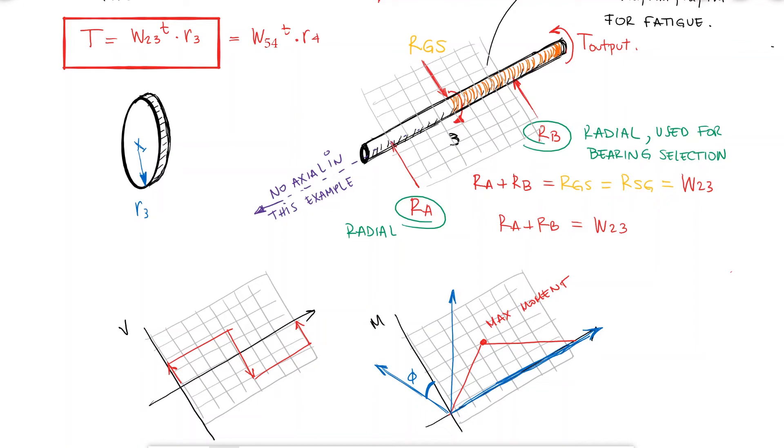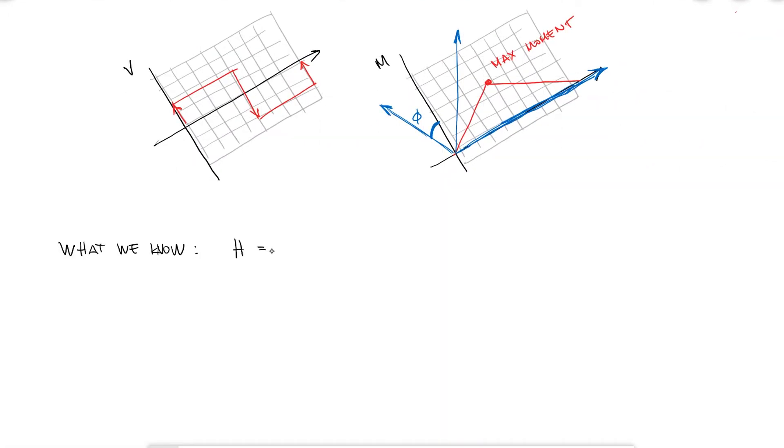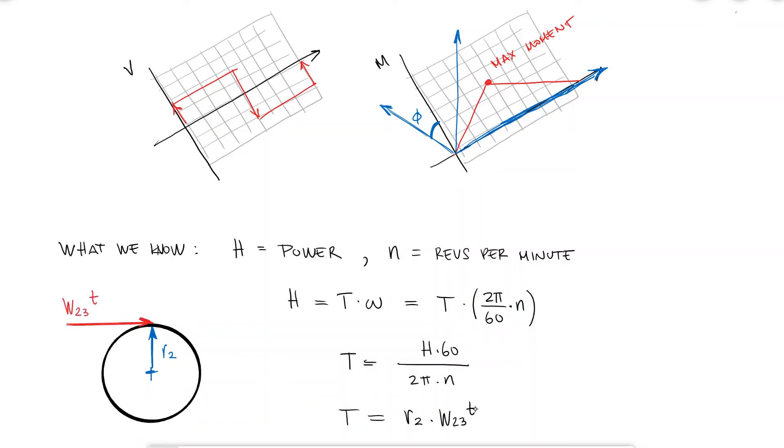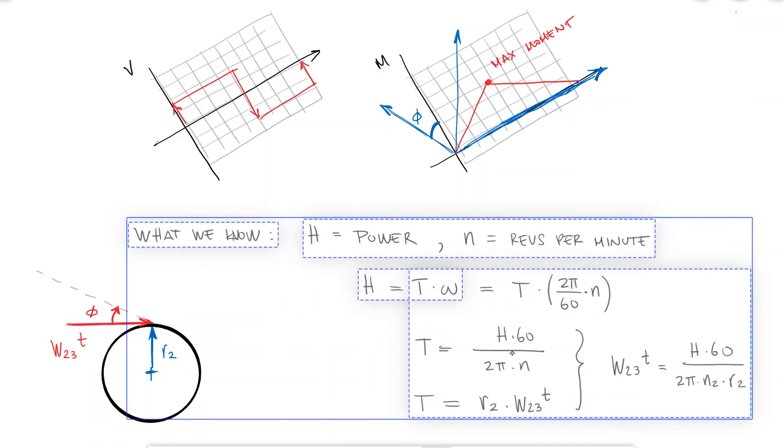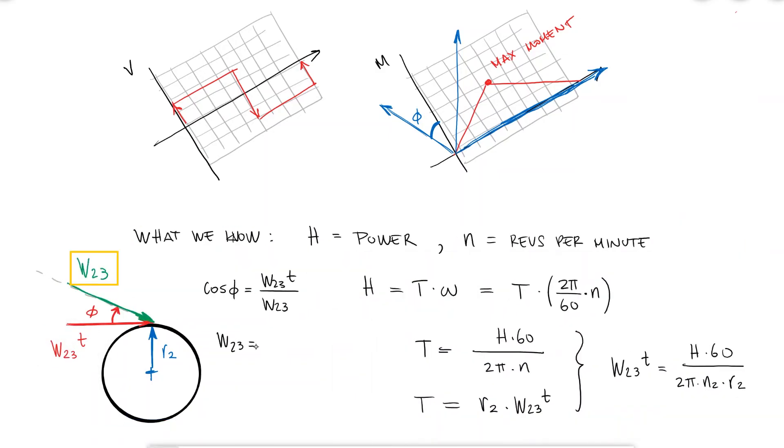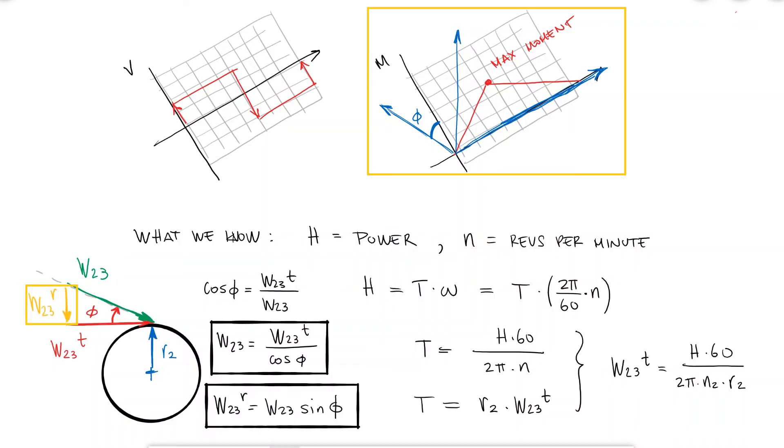The reason we care about the components is because what we know about the system is the total power we're trying to transmit. With both the power and the RPM information, we can find out the torque, and with the pitch radius of the first gear, in this case gear 2, the only thing we really know is the tangential component of the force W23. If we know the pressure angle and the tangential component of W23, we can calculate the entire vector force W23, and with it, the radial component of W23, the one we need for the bending of the shaft and for selecting proper bearings.